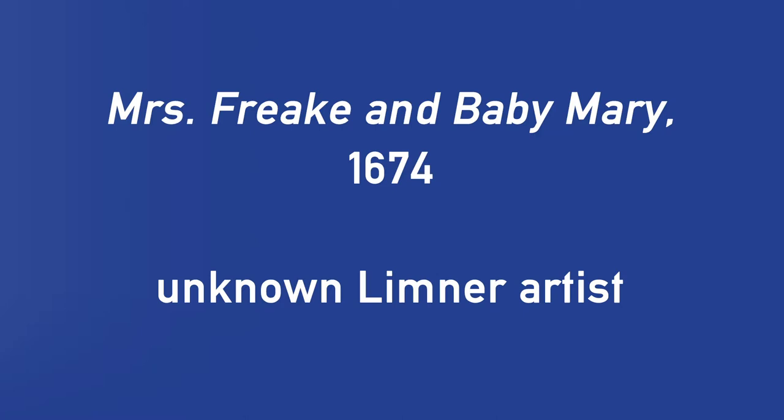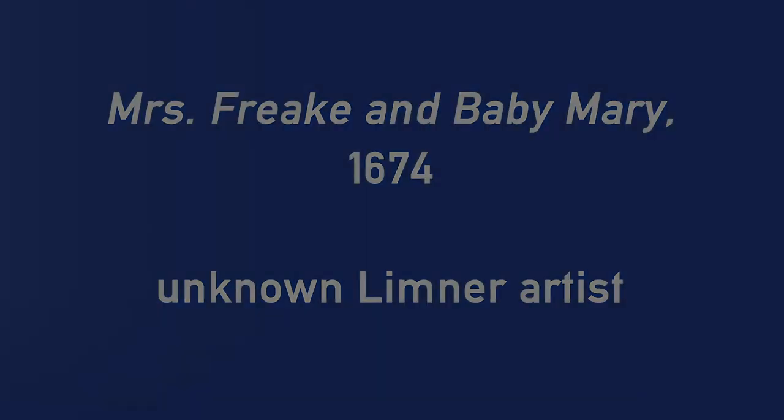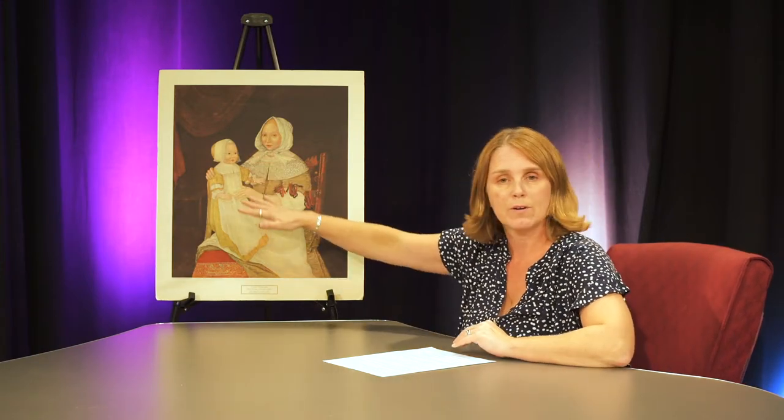This next piece is titled "Mrs. Freak and Baby Mary" and was painted around 1674. The artist is an unknown limner. Oftentimes the limner artists would travel from town to town and weren't really known, so we don't know the name of the artist. In addition to painting portraits, they would sometimes bring props along — jewelry and costumes — so you would sometimes see the same props in painting after painting with just different families portrayed. Ask the kids what qualities of this painting make it folk art: the awkward anatomy, the fact that it's a family portrait of a mother and child, and the general time period of the piece.